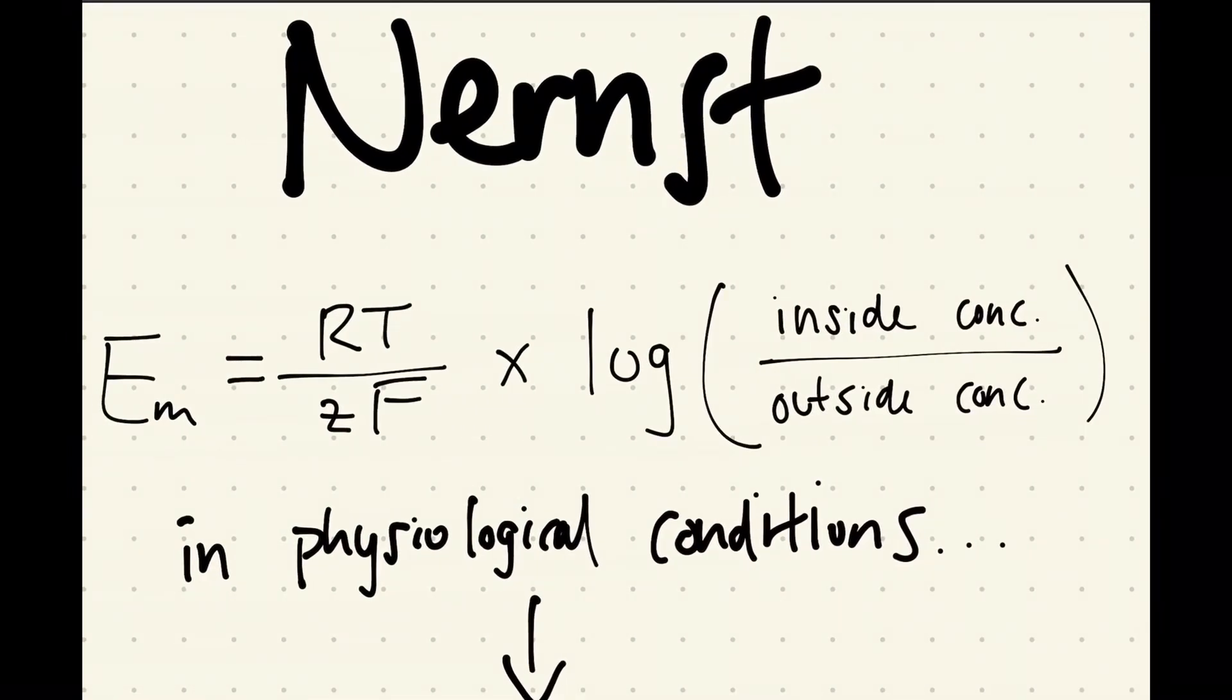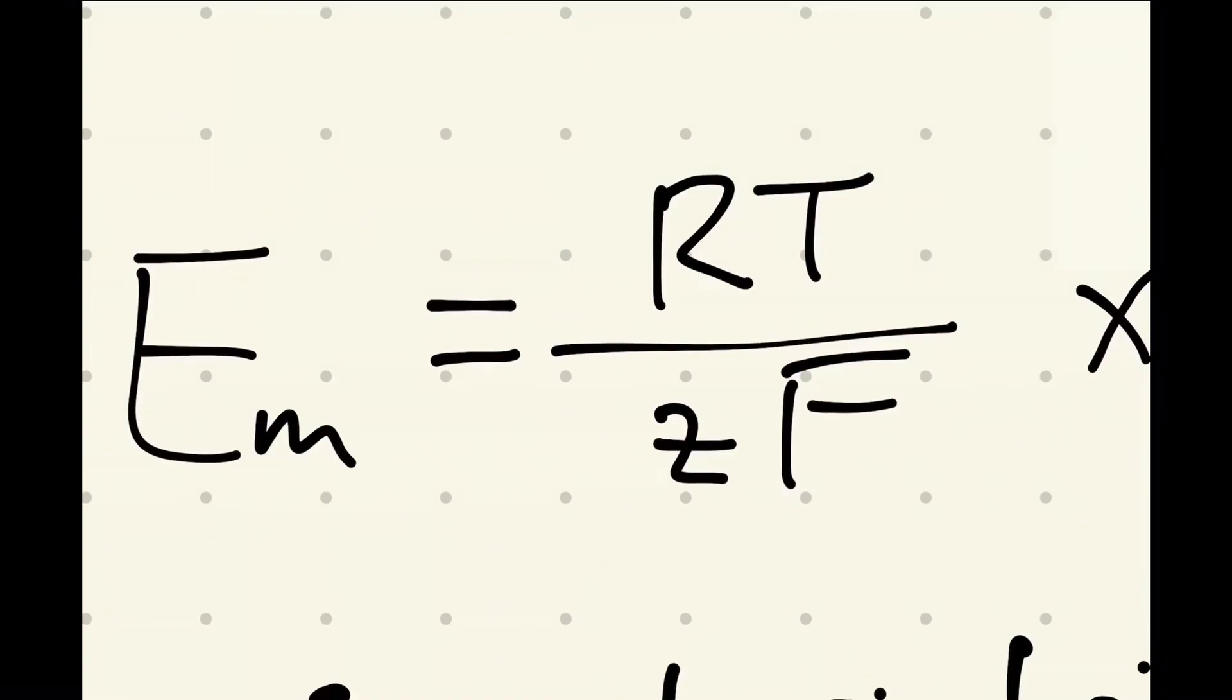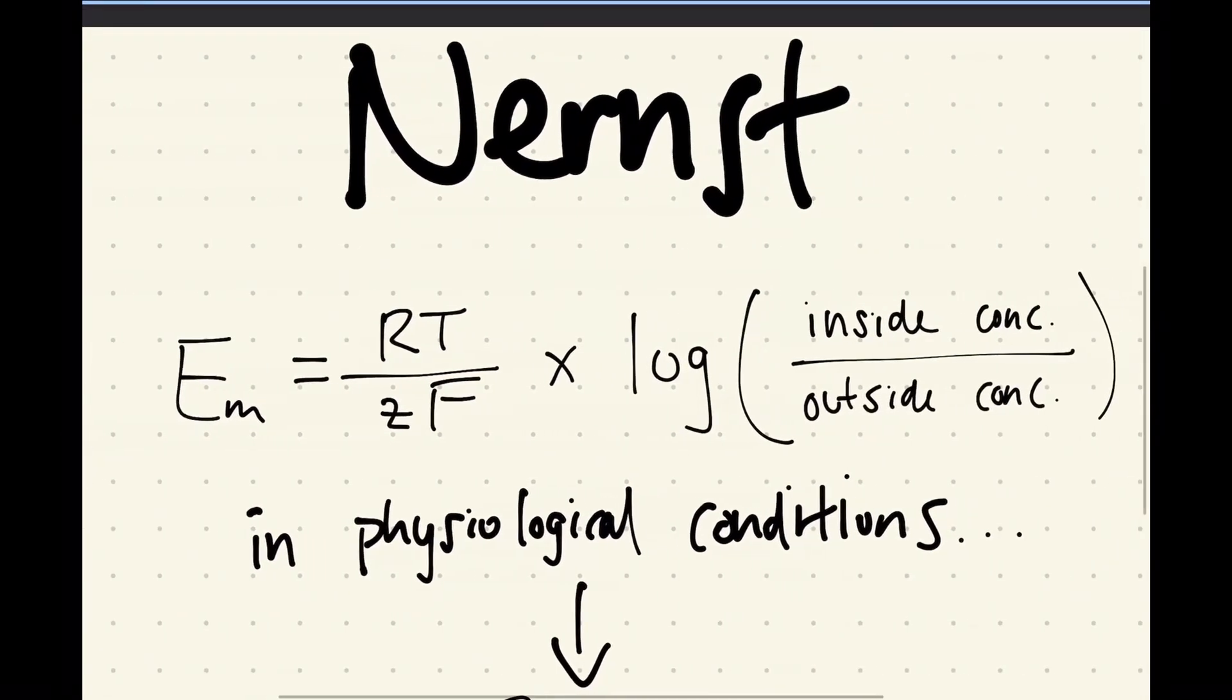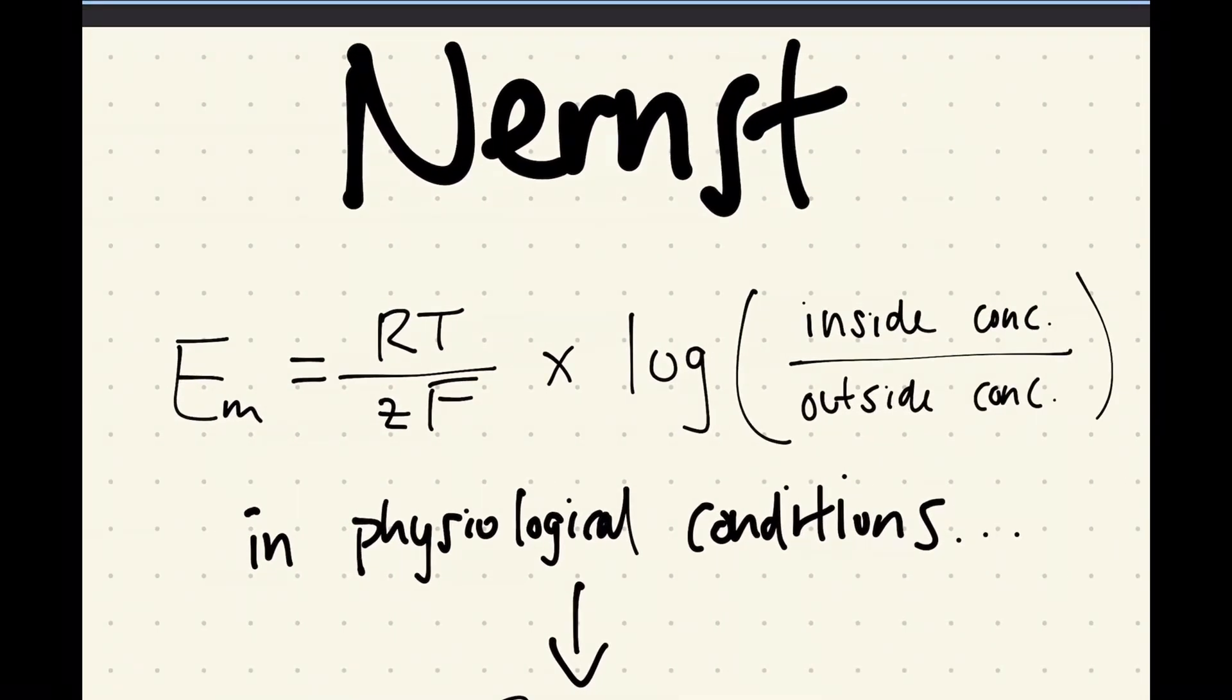So let's get to the equation itself. It's EM, which is the membrane potential, is equal to RT over ZF times the log of the inside concentration of that one ion and the outside concentration of that one ion. The reason why it says membrane potential is because we're assuming that this cell only deals with one ion.